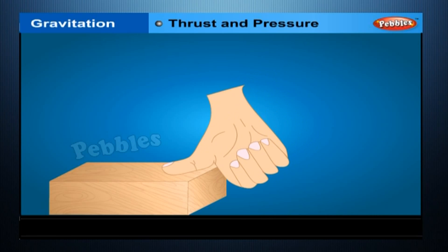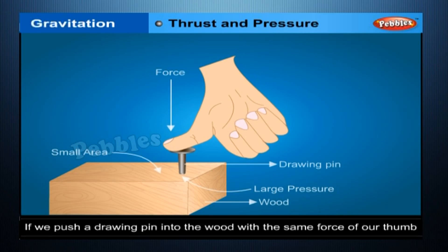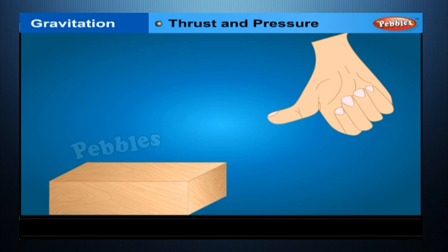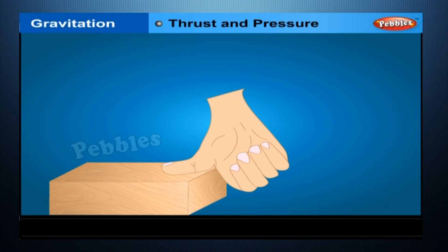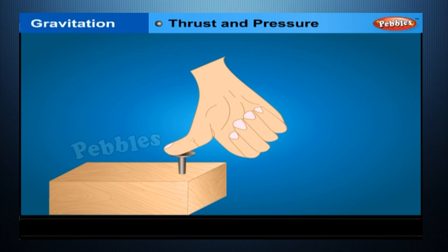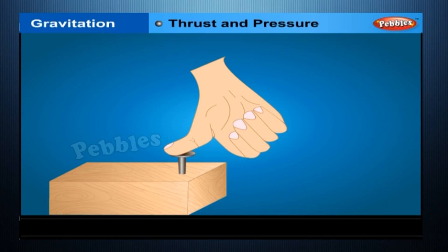Thrust and pressure: if we push hard on a piece of wood with our thumb, the thumb does not go into the wood. But if we push a drawing pin into the wood with the same force, the drawing pin goes into the wood. Our thumb does not go in because the force falls on a large area, making the pressure small. The drawing pin goes in because due to its sharp tip the force falls on a very small area, making the pressure very large. Pressure is the force acting on a unit area of the object.